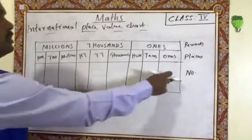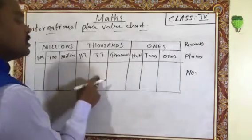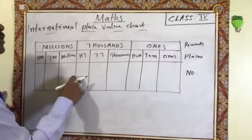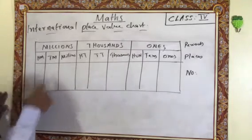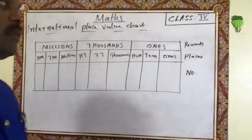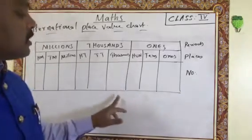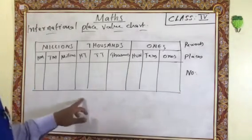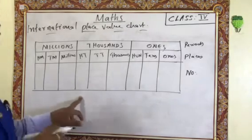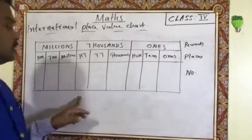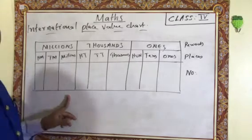So the full chart reads: Ones, Tens, Hundreds, Thousands, Ten Thousands, Hundred Thousands, Millions, Ten Millions, Hundred Millions. In the Indian place value system, instead of Hundred Thousands we use Lakhs, and instead of Millions we use Ten Lakhs. This is the chart for the International place value system.